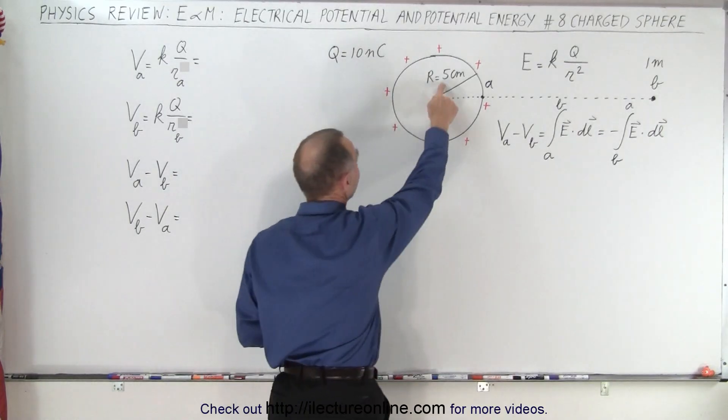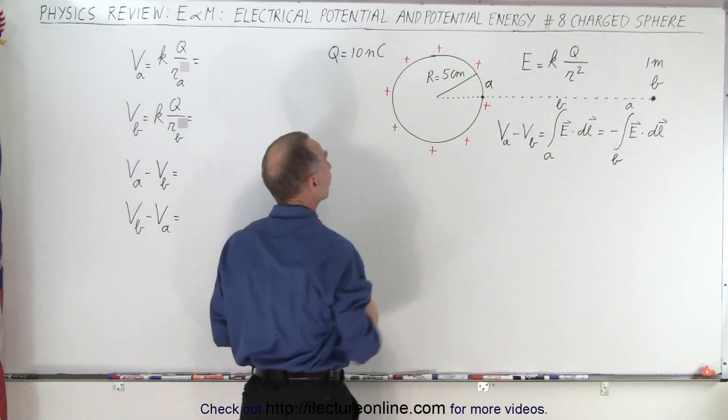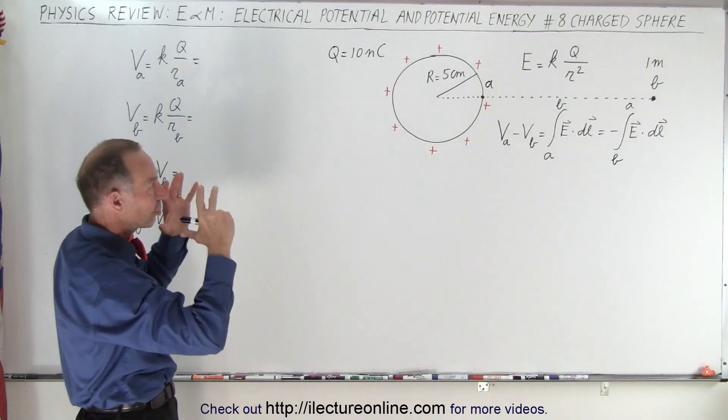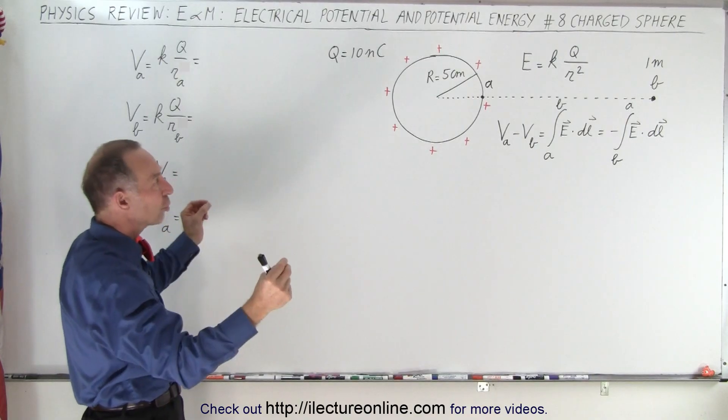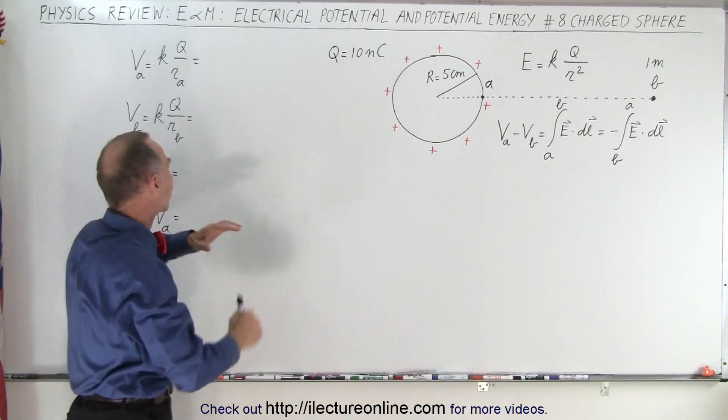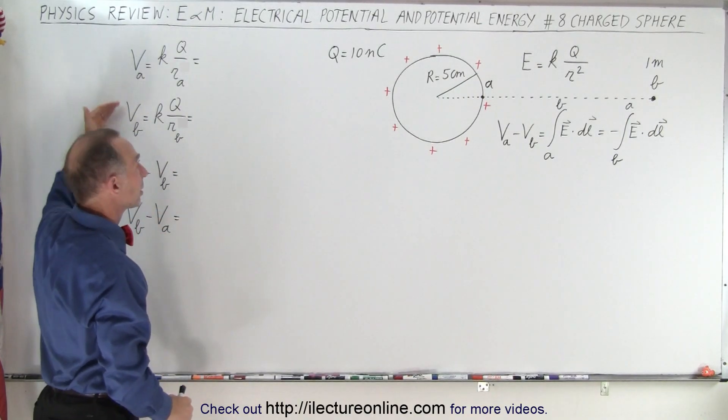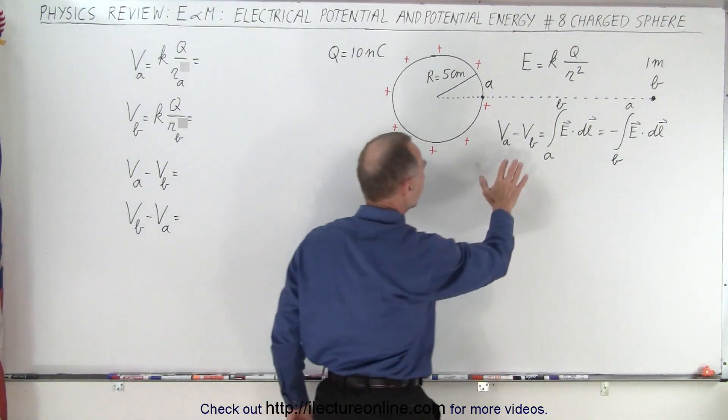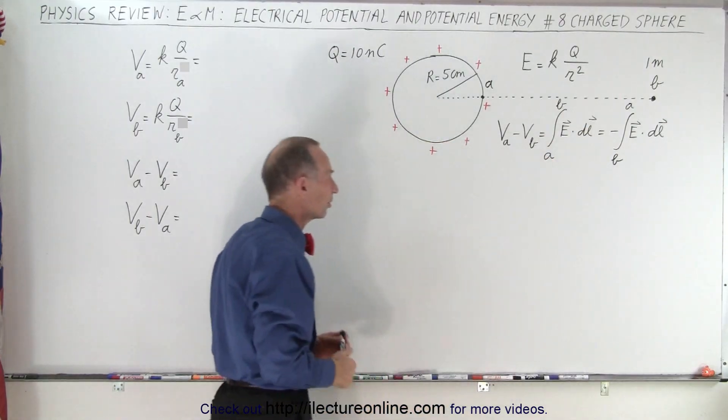Notice the radius of the sphere is 5 centimeters and the charge on the sphere is 10 nanocoulombs. Because we have all the charge on the outside of the sphere, it acts as if all the charge is at the center of the sphere. That's why we can use these two equations right here to find the voltages A and B, and I'll also show you how to find the voltage between the two points using this integration equation.